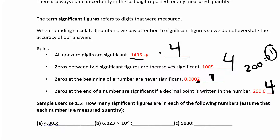To summarize: if there are no zeros present, everything is significant. If zeros are sandwiched between two non-zero digits, they are significant. If zeros are at the beginning, they are not significant — don't count them, start counting at the first non-zero digit. And if zeros are at the end, they are significant only if a decimal point is present.